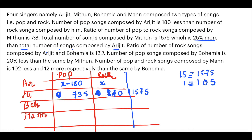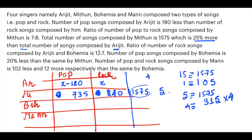The total number of songs composed by Mithun is 1575, which is 25% more than the total by Arijit. So if Arijit is 4, Mithun is 5. Since 5 equals 1575, one part equals 315, so four parts gives Arijit a total of 1260 songs. The ratio of rock songs composed by Arijit and Bohemia is 12:7.